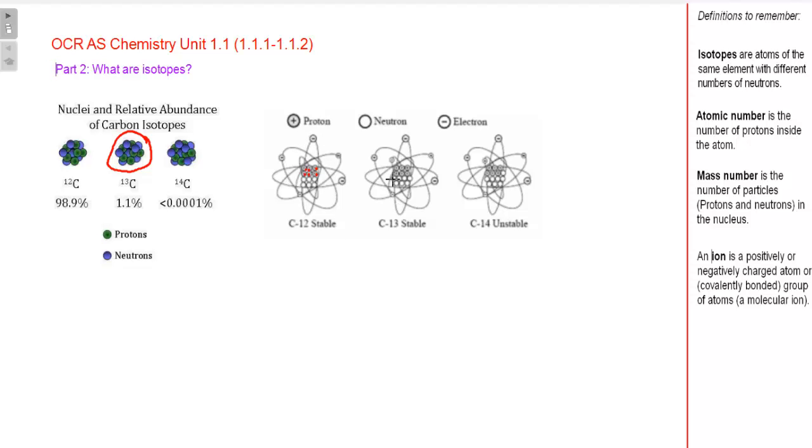If you look at carbon 13, they have 1, 2, 3, 4, 5, 6, 7 neutrons. And if you keep going to carbon 14, 1 extra neutron is always added. So the definition is isotopes are atoms of the same element with a different number of neutrons.